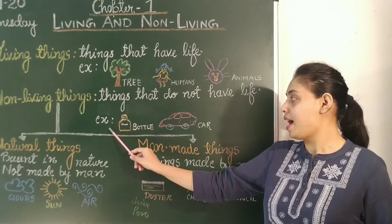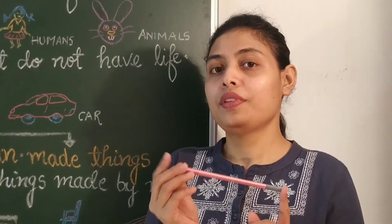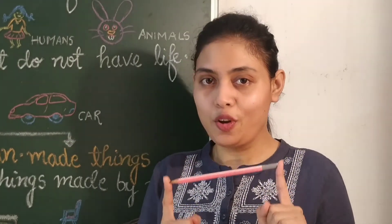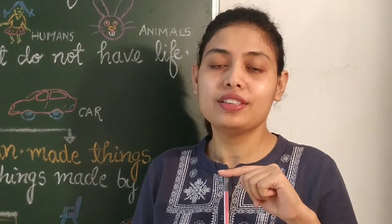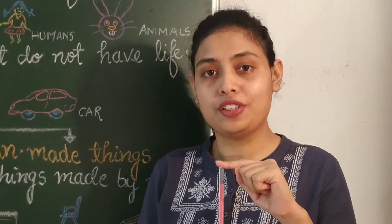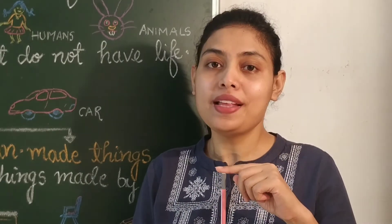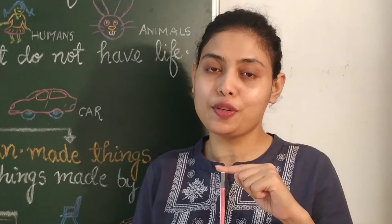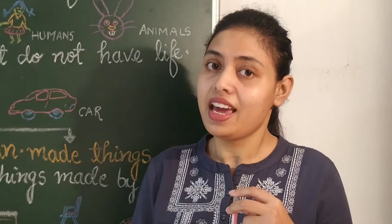Things that do not have life are called non-living things. For example, bottle and car. Even this pencil is a non-living thing. Why? Because a pencil does not grow year after year, does not breathe, and cannot move by its own. Because of these characteristics, we can say a pencil is a non-living thing.